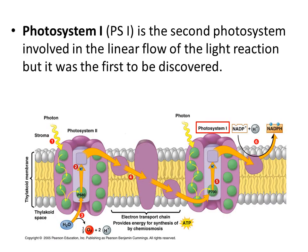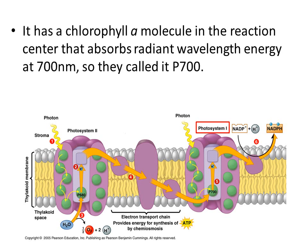Photosystem 1 is the second photosystem involved in the linear flow of the light reaction, but it was discovered first. Photosystem 1 has a chlorophyll A molecule in its reaction center, but this chlorophyll A doesn't absorb best at 680 — it absorbs best at 700. So we are going to call it P700.